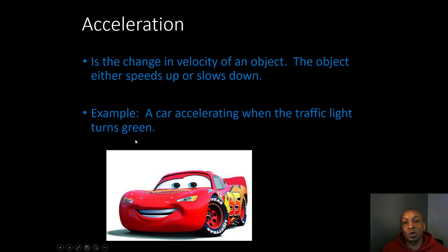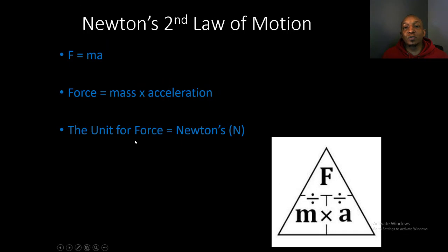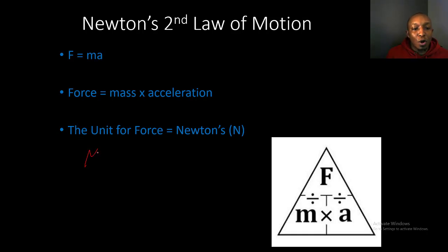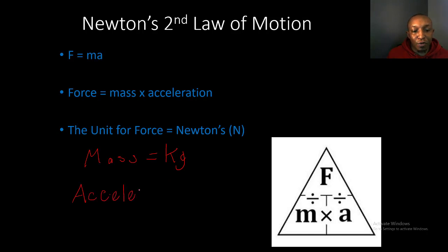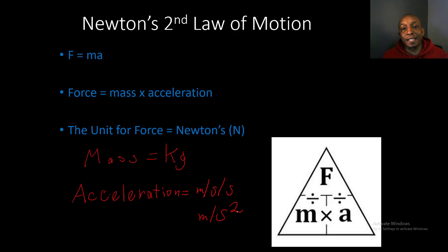For example, a car accelerating when the traffic light turns green, and vice versa, if the traffic light turns red, the car would actually slow down. Newton's second law of motion can be remembered by a simple equation: force equals mass times acceleration. The unit for force is Newtons, the unit for mass is kilograms (kg), and the unit for acceleration is meters per second squared.